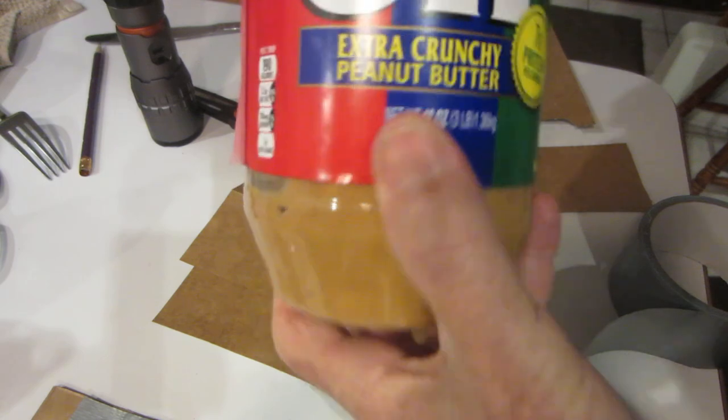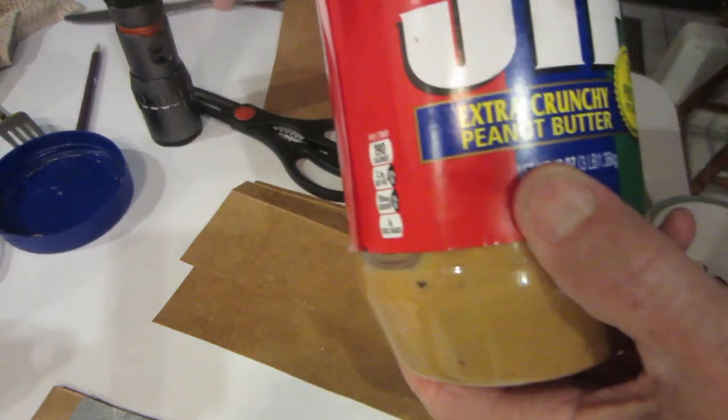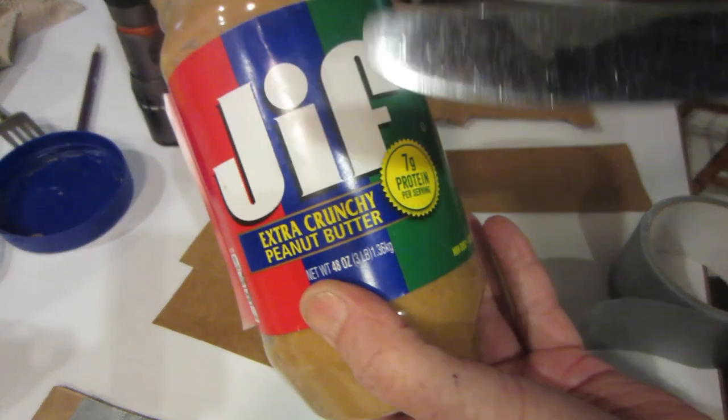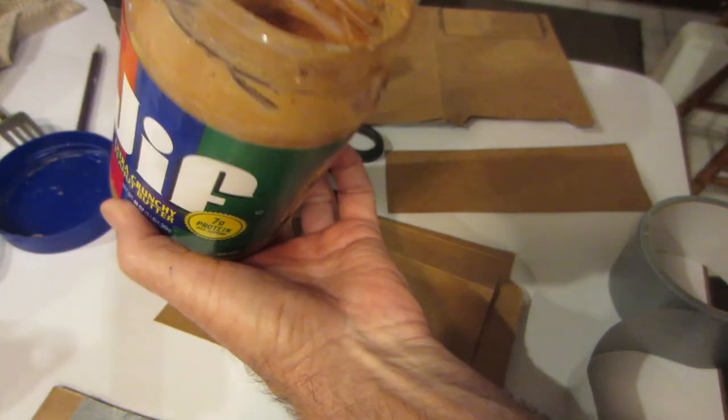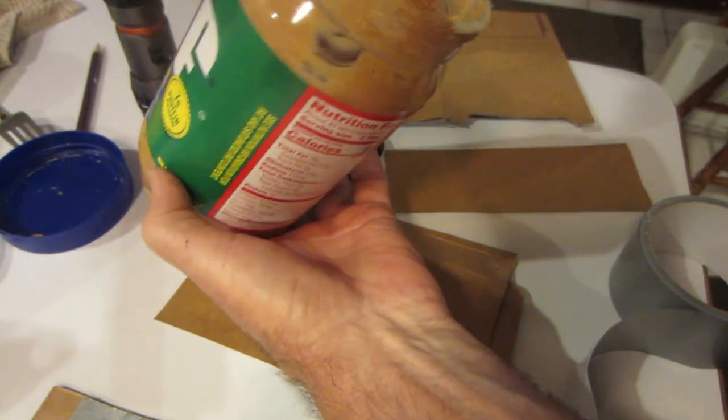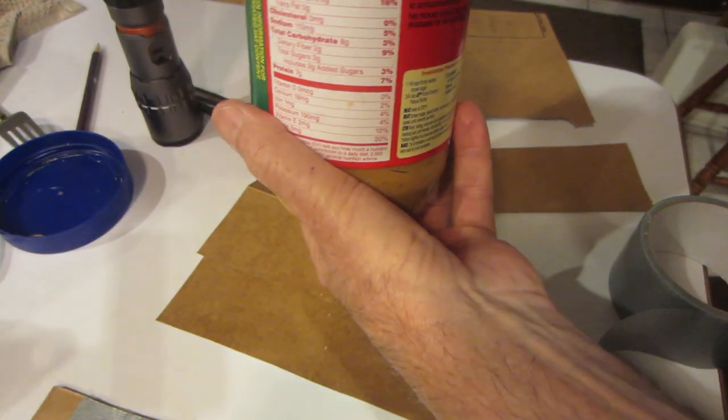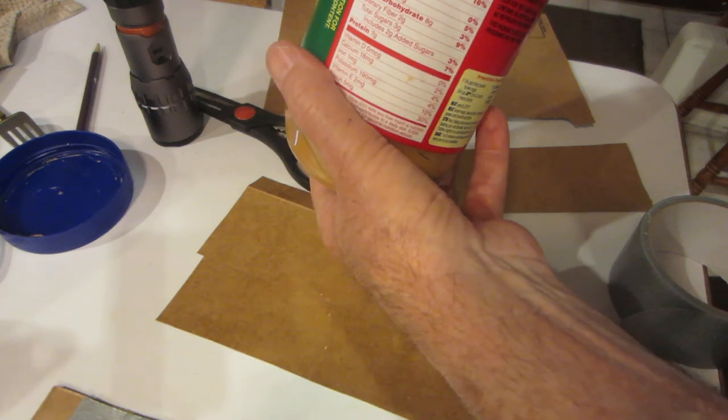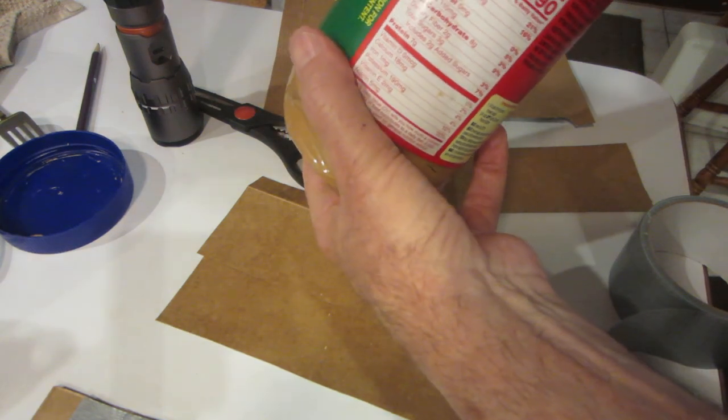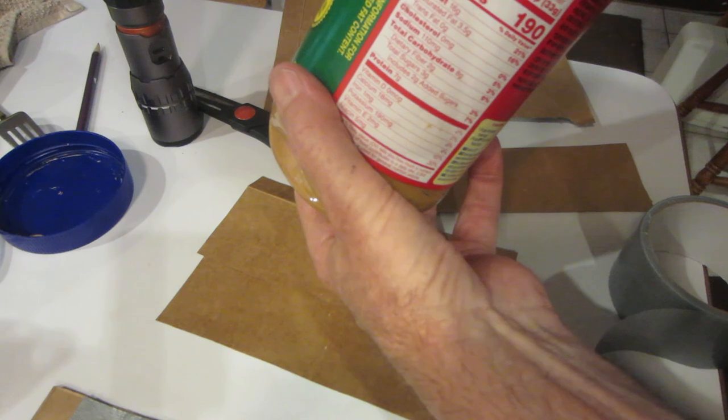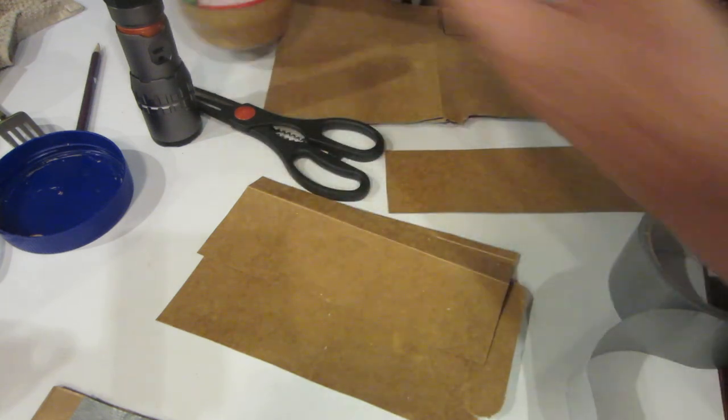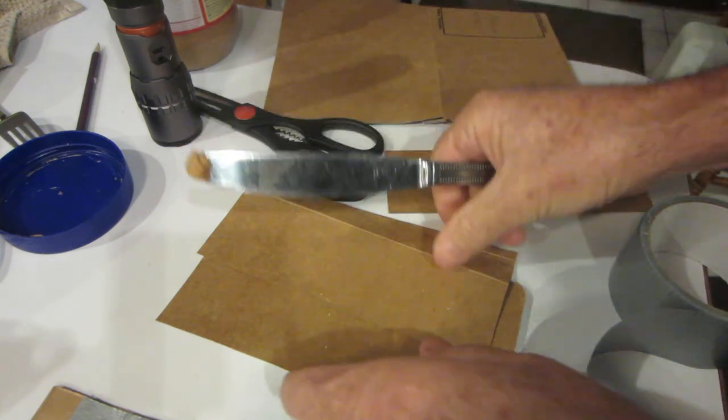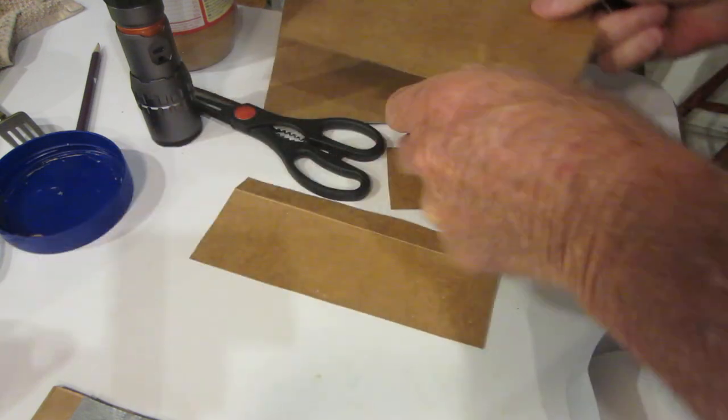So take your peanut butter. Now this is crunchy, but I'll just use my knife to take out some of the non-crunchy part, because you really don't want crunchy, because you don't want it sticking up high.